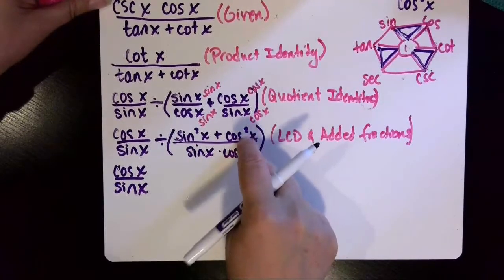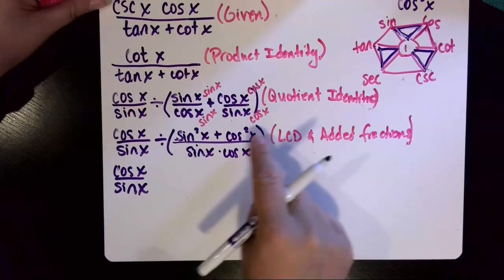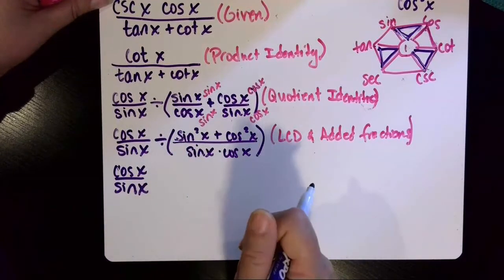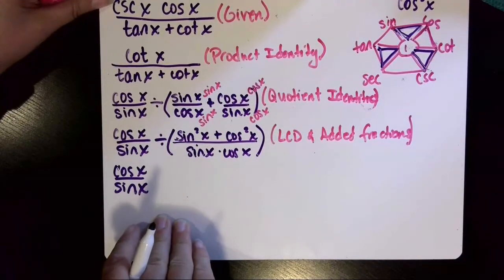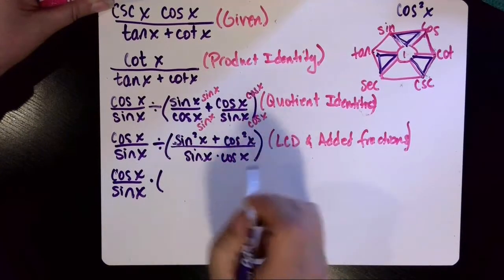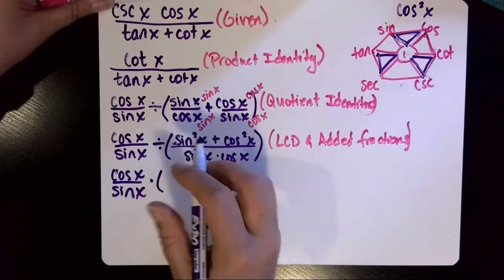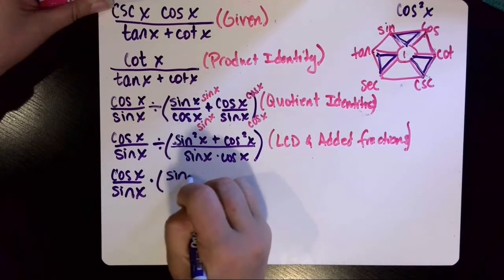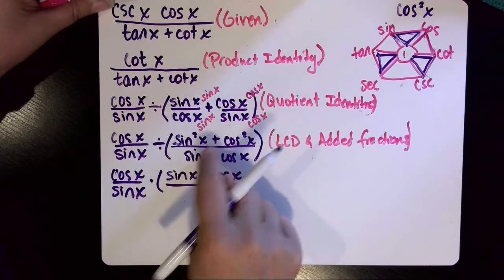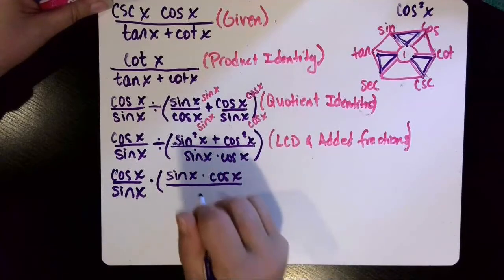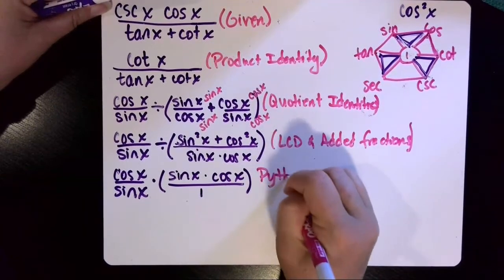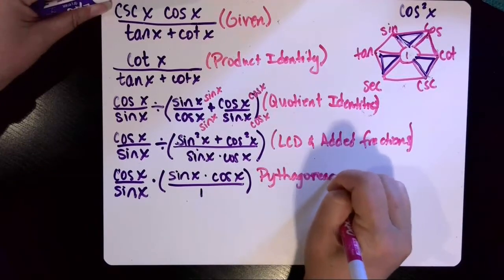And when I go to swap out that Pythagorean identity, I'm going to still need to divide these fractions. And to divide by a fraction is the same as multiplying by the reciprocal. That's what the meaning of dividing a fraction is. So I'm going to change this division to multiplication, and then just multiply by the reciprocal. So this denominator, sine times cosine, that's going to come up into the numerator now when I take the reciprocal. So sine x times cosine x is now on top. And then I'm going to swap out that Pythagorean identity, the sine squared x plus cosine squared x equals one. And my reason for that step is Pythagorean identity.